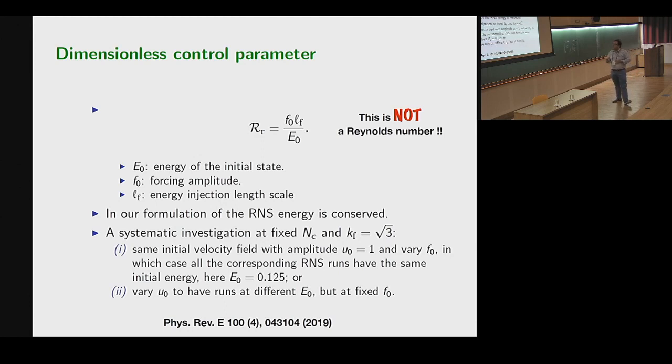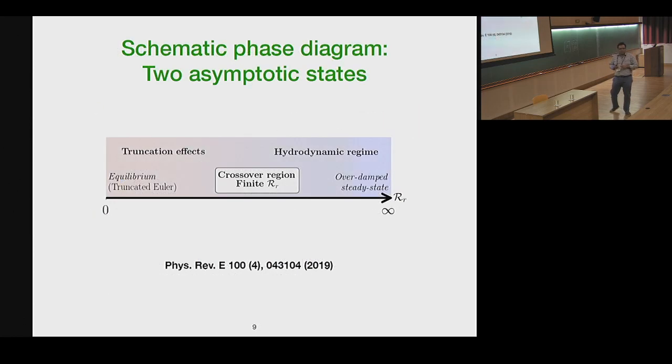If you stare hard at this equation, you can think of two protocols. If you fix the forcing length scale, you can keep energy constant and vary the forcing amplitude to study the statistical properties in a systematic way, or you can do the vice-versa, you keep f0 fixed and vary e0 from the initial state. So we'll make use of these two protocols.